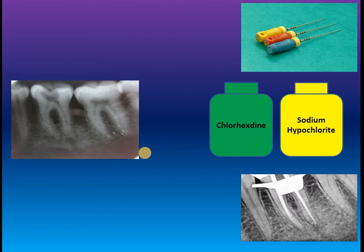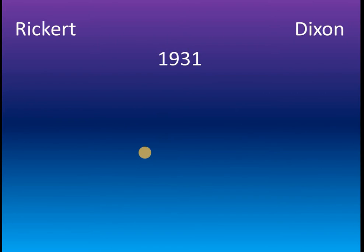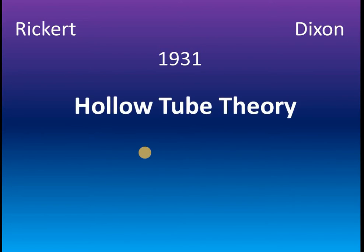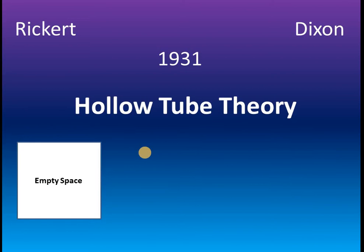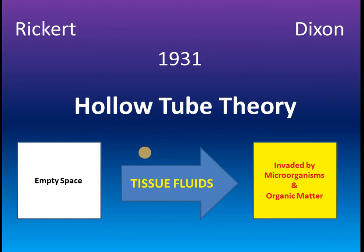The reason for this failure can be explained from the hollow tube theory. Rickard and Dixon in the year 1931 formulated the hollow tube theory, according to which an empty space within a living organism tends to be filled with tissue fluids in a short period of time. This theory was based on observations on experimental animals.